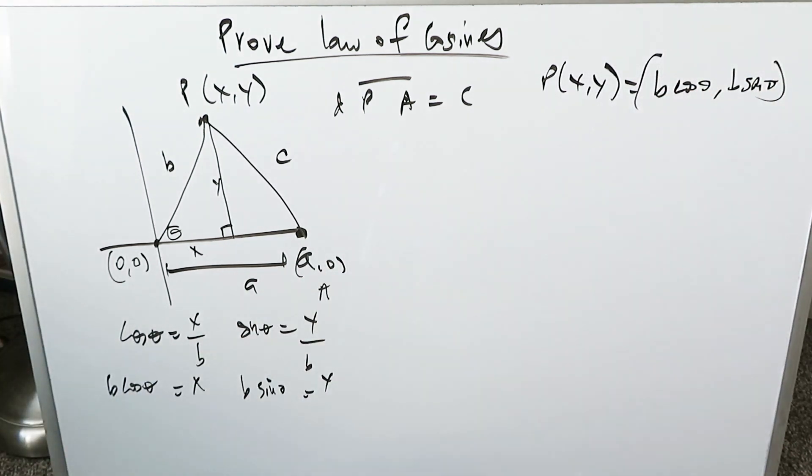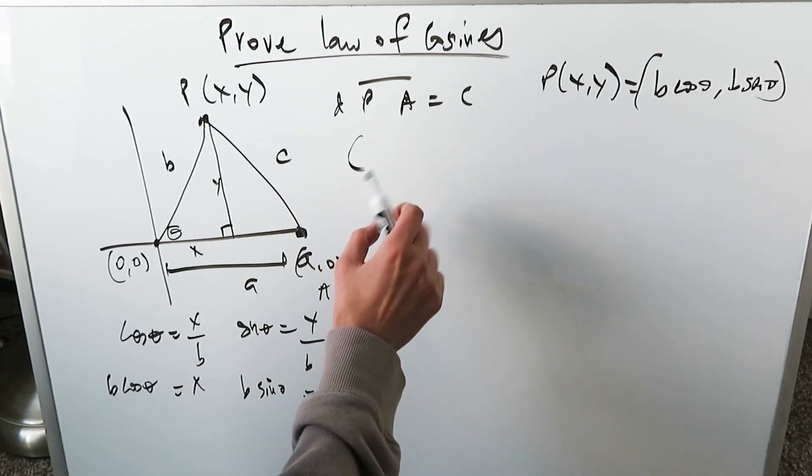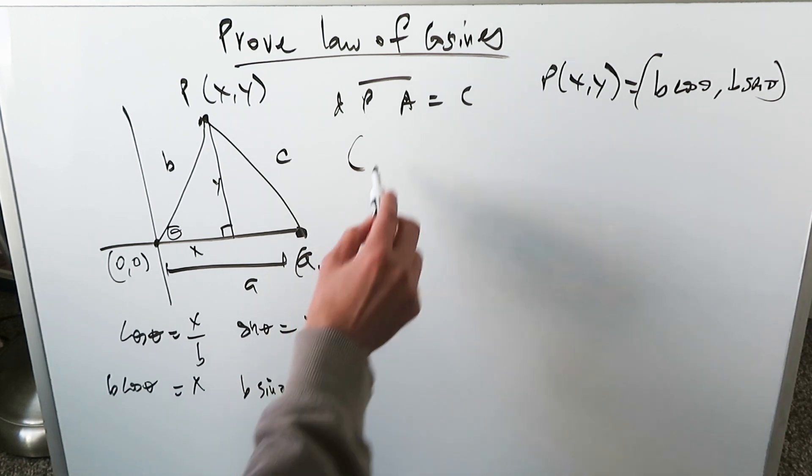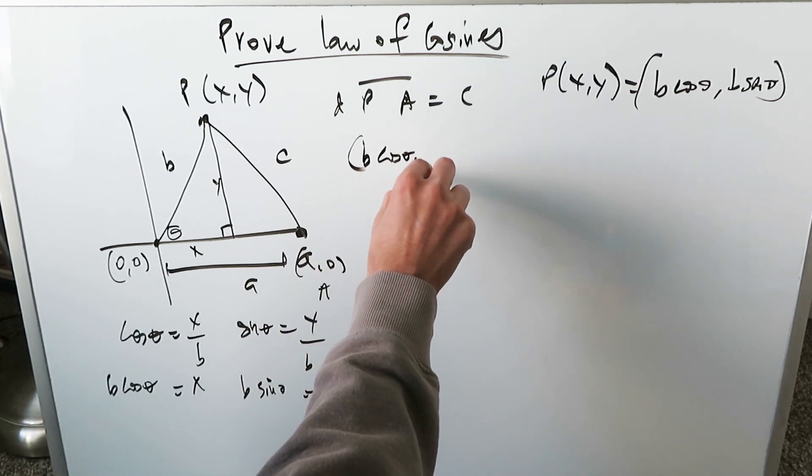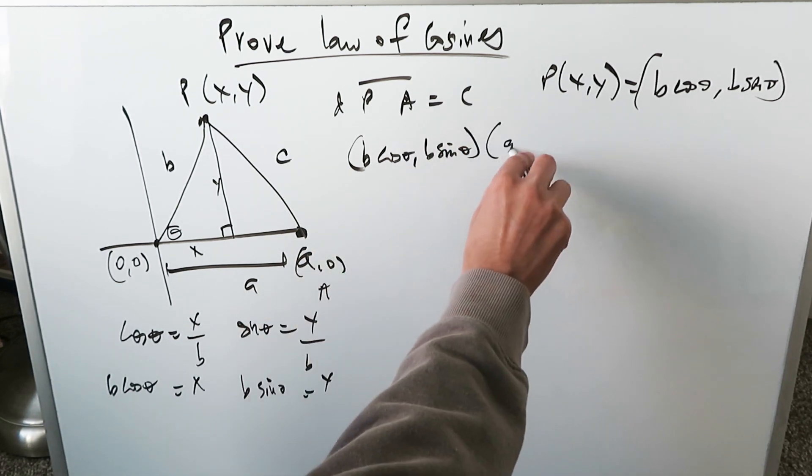Now you have everything you need. You have your point P and you have your point A coordinate. So you're finding the distance of this segment, which is made of the following two coordinate pairs. You have b cosine theta and b sine theta. This represents point P. And then you have a comma zero.